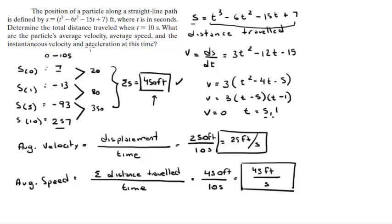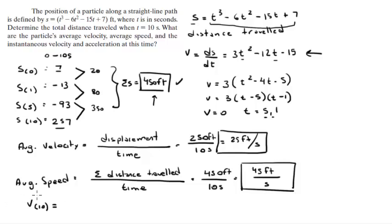For the instantaneous velocity at t = 10, we already found the velocity equation. Plug in t = 10 and you get that the velocity at t = 10 is equal to 165 feet per second.